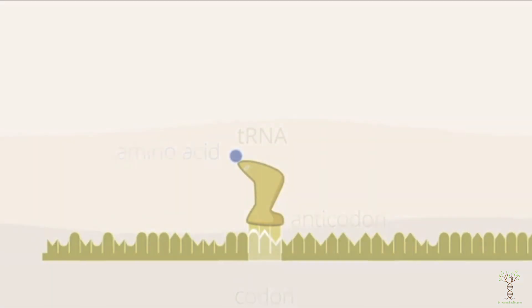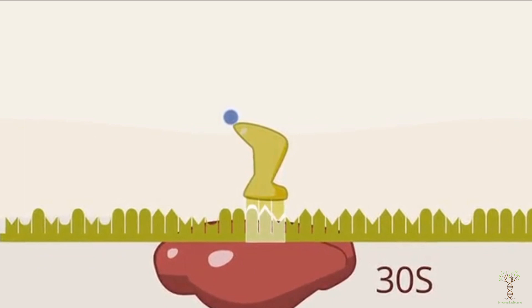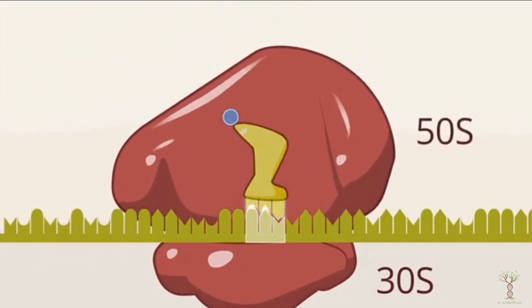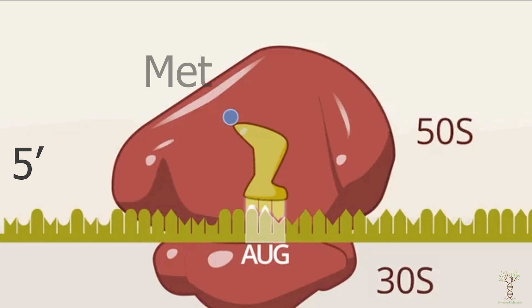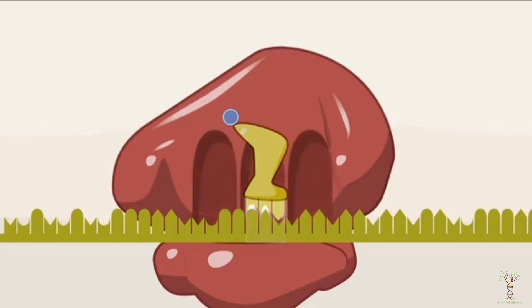Given any messenger RNA sequence, you can use the genetic code to figure out the amino acids. When translation begins, the small and large subunits of the ribosome assemble around the messenger RNA. The beginning of the messenger RNA is the 5' end. The start codon is always AUG, and the transfer RNA that matches that codon carries the amino acid methionine. This is the only transfer RNA that begins in the middle of the ribosome.